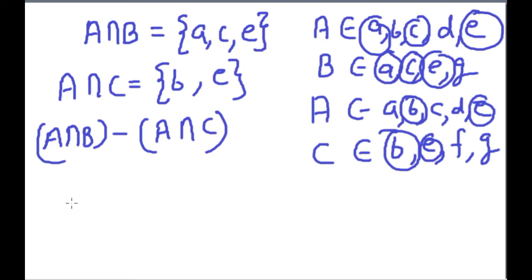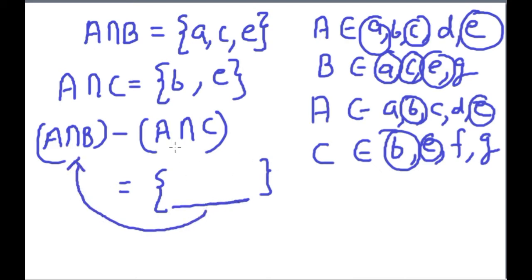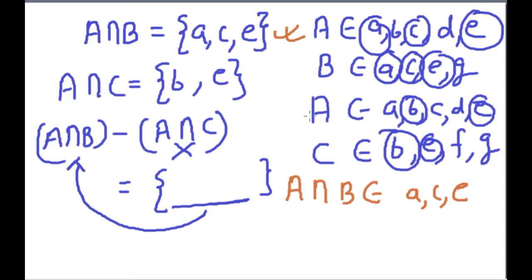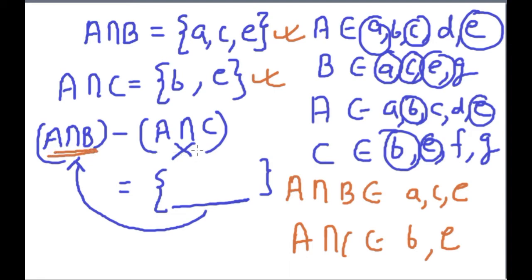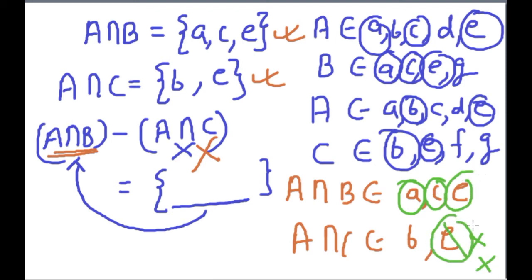Now for (A intersection B) minus (A intersection C): we need to write elements that are only in A intersection B and not in A intersection C. A intersection B = {A, C, E} and A intersection C = {E}. We can see that A is not in A intersection C, C is not in A intersection C, but E is present there, so we do not include E. Therefore the result is {A, C}.